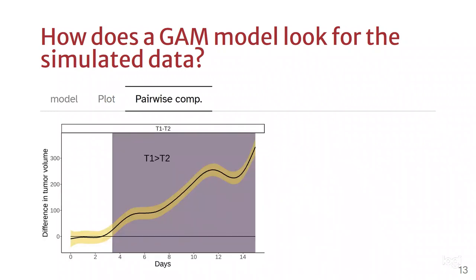Here we have a pairwise comparison, and whenever we have the confidence interval, which is the yellow stripe not falling over zero or covering zero, we can tell that there is a significant difference. And we can see that it starts happening around day three.